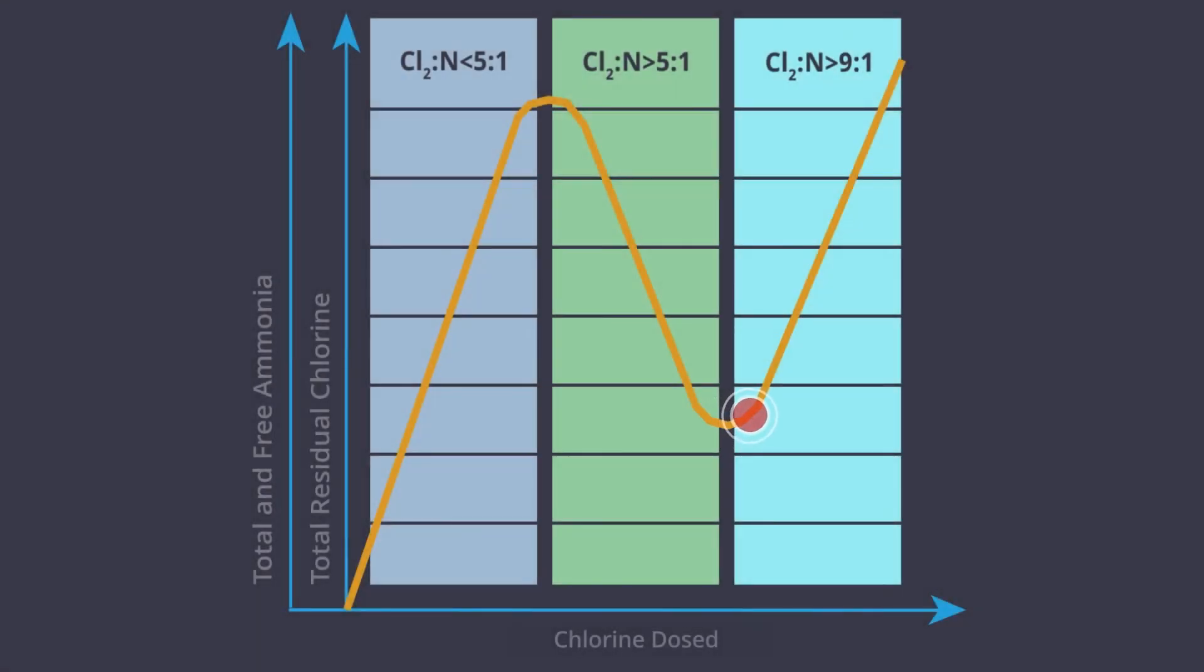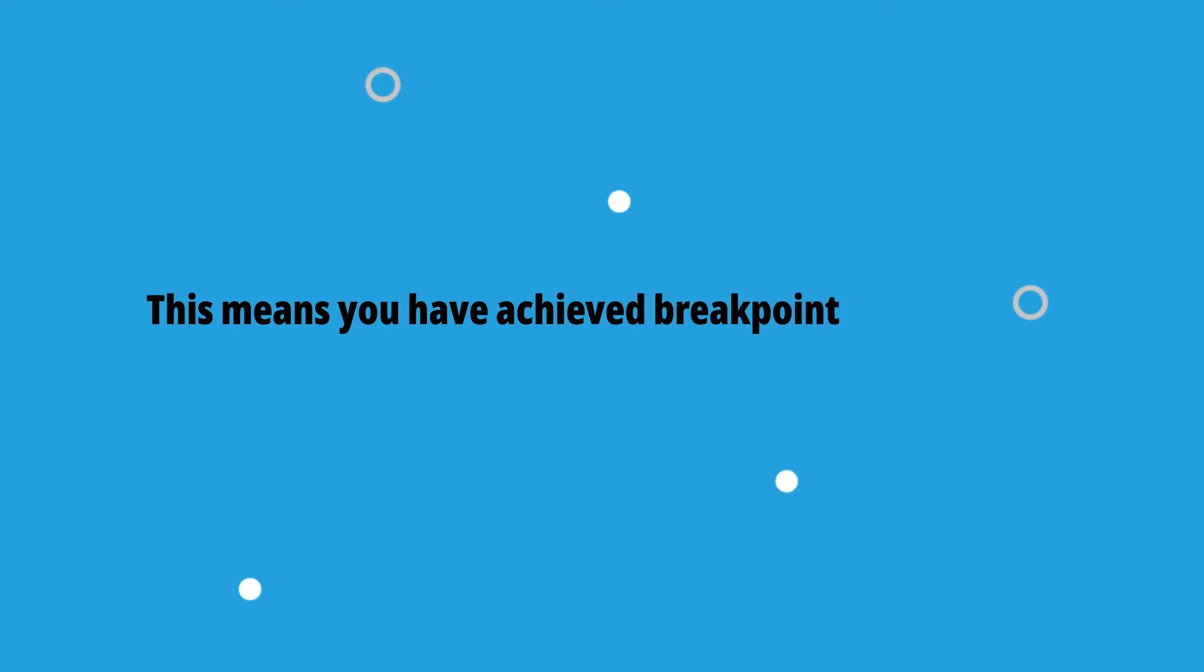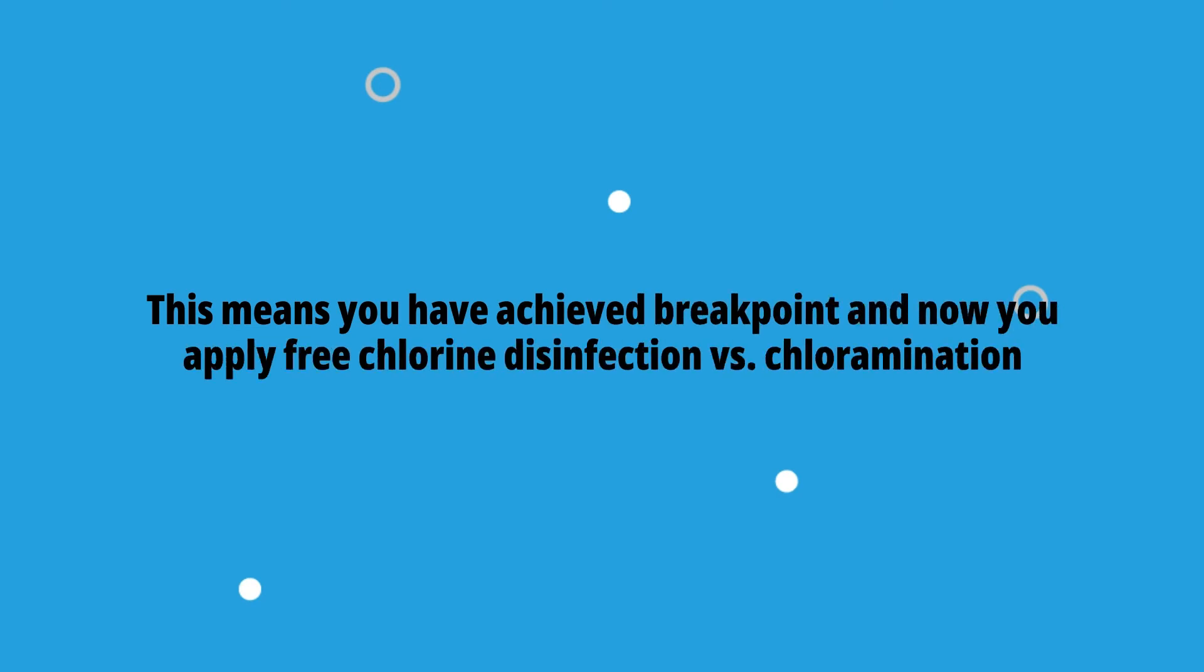When you have fully bonded and then have removed all ammonia nitrogen past this point, you return to the original chlorination curve, where for every part of chlorine you dose, you will see one part of chlorine residual formed. This means you have achieved breakpoint, and now you apply free chlorine disinfection versus chloramination of your water.